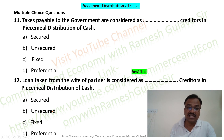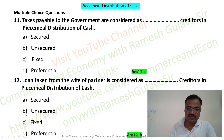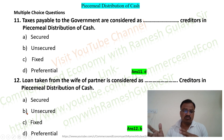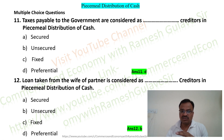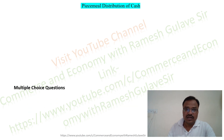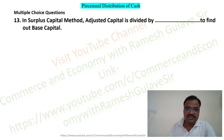Question 12: Loan taken from a retiring partner is considered as a third party liability and is basically an unsecured creditor. So option B is the right answer. The loan taken from a retiring partner has to be paid along with unsecured creditors like creditors, bills payable, or bank loan.